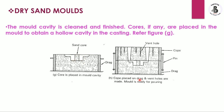Finally, the cope is placed onto the drag. Vent holes are made and the mold is ready for pouring. The combination of cope and drag forms the sand mold, with the sprue, gating system, mold cavity around the core, and riser all in place. Molten metal is poured from the sprue, completely filling the mold cavity, and then fills the riser. The riser ensures 100 percent filling of the mold cavity and also provides additional material required during the solidification process.